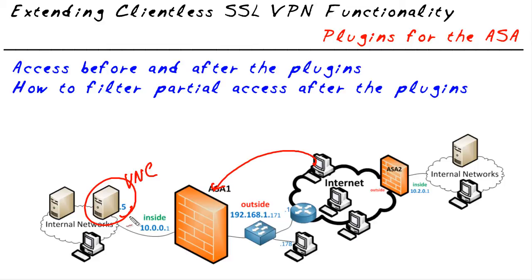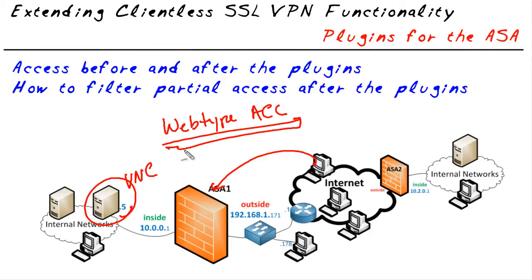So we have this user as a clientless SSL VPN doing a VNC session through the plugin over to this device. Now the challenge is: what if we don't want that same user or group of users to be able to VNC to any of our devices? How do we stop that? To stop that, we're going to use something called a web type ACL. That web type ACL can use regular expressions as variables and we can filter on SSH, remote desktop protocol, or VNC - pretty much anything coming in through the clientless SSL VPN connection, we can filter.